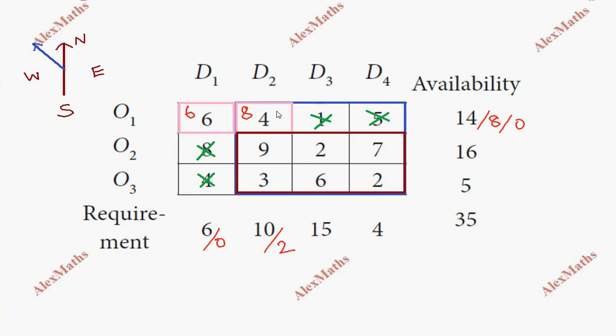Once again, the north-west corner. The requirement is 2 units remaining, and we have 16 available. We supply 2 units, so the requirement becomes 0. From the 16, we supplied 2, so 14 units remain available.